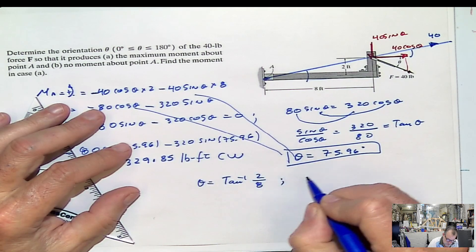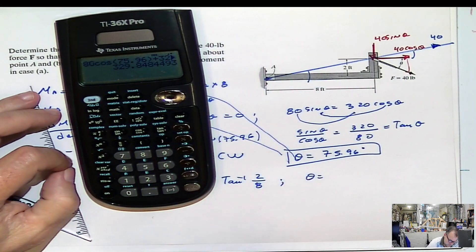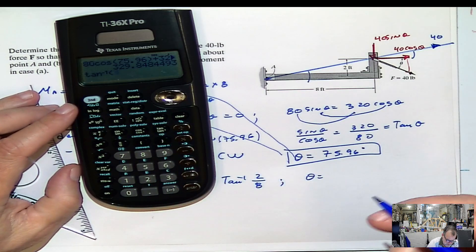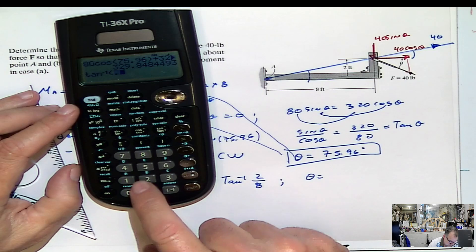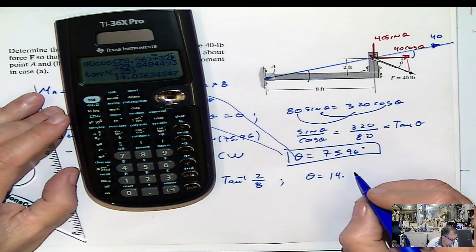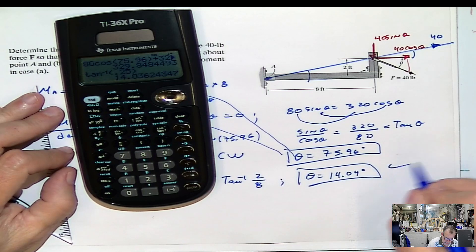Which will give you an angle of inverse tangent of 2 divided by 8 is 0.25, right? That would be 14.04 degrees. That's it.